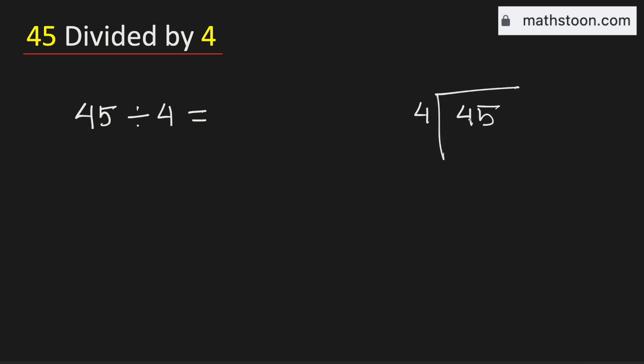We will consider the first digit 4. We know that 4 times 1 is 4. Now subtract, we get 0.